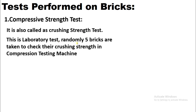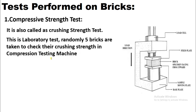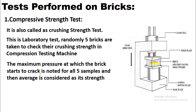This is a laboratory test in which randomly five bricks are taken to check their crushing strength in a compression testing machine. Load is applied downward via the load cell and fixed plate, with the brick sample placed so that the frog is upward and pressure is applied from the top. The maximum pressure at which the brick starts to crack is noted for all five samples, and then the average is considered as its strength.